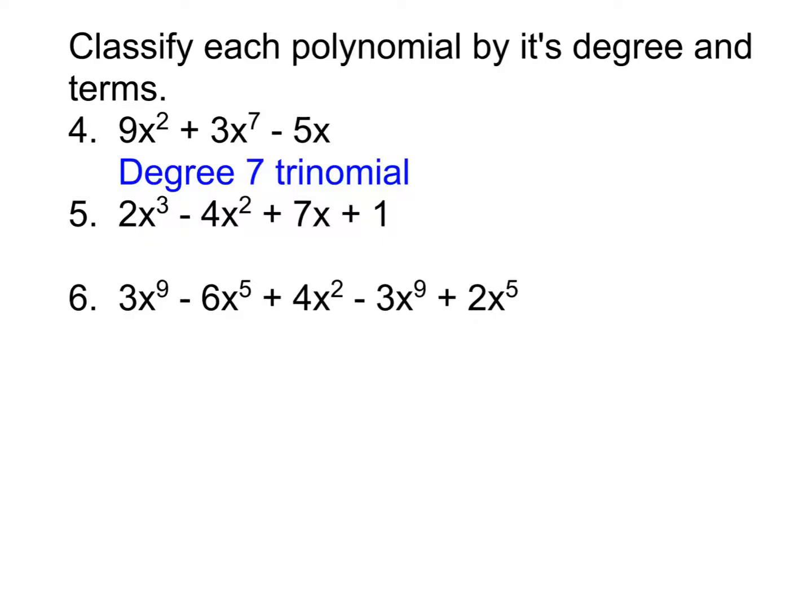Number five now. First up, by degree. What is the degree in number five? Three. And so degree three is called cubic. So this one's cubic. And then how many terms are there? Four terms. And any time it's four terms or more, we just say it's a polynomial of four terms or whatever the number of terms is. So this one's a cubic polynomial of four terms.